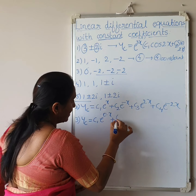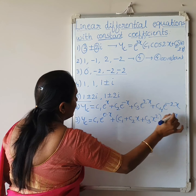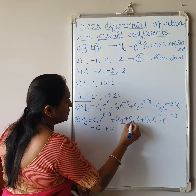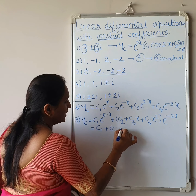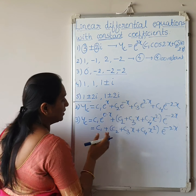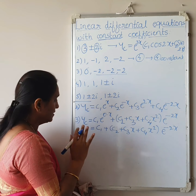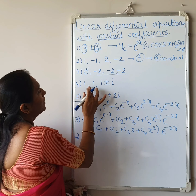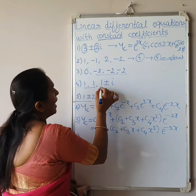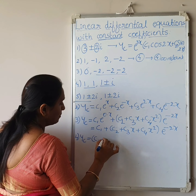For the third example, yc equals c1·e^(0·x) plus (c2 plus c3·x plus c4·x²)·e^(-2x). Since e^(0·x) equals 1, this simplifies to c1 plus (c2 plus c3·x plus c4·x²)·e^(-2x). Always take care that the same constant does not repeat in the solution, because they are arbitrary constants with potentially different values.